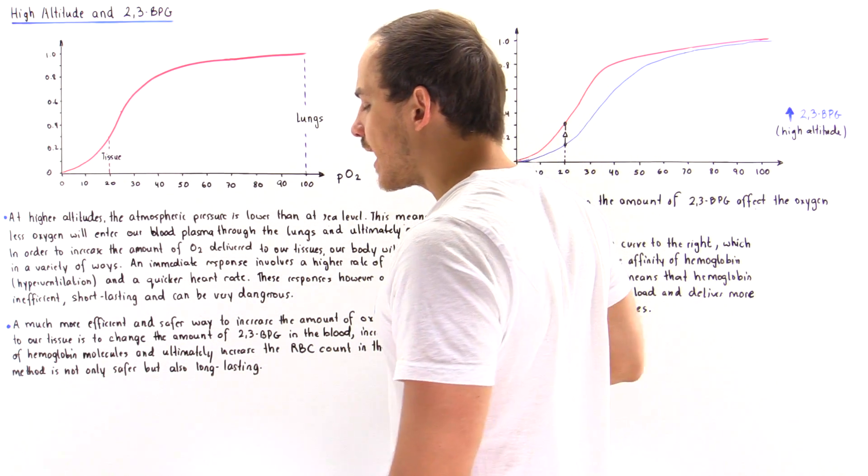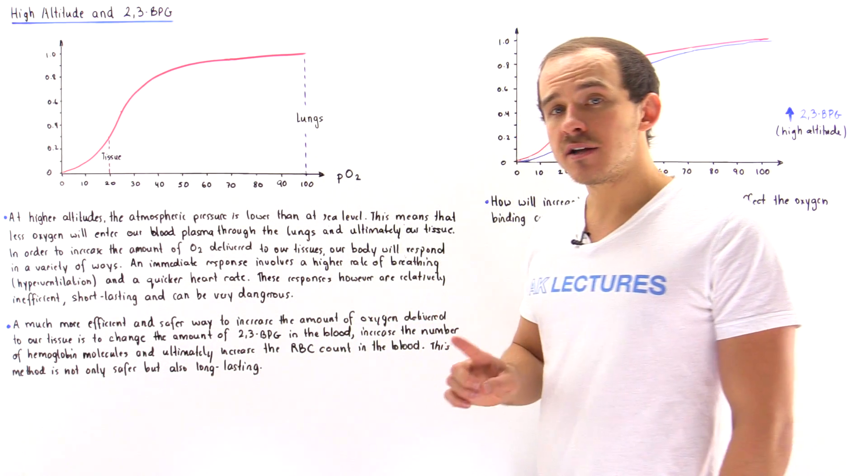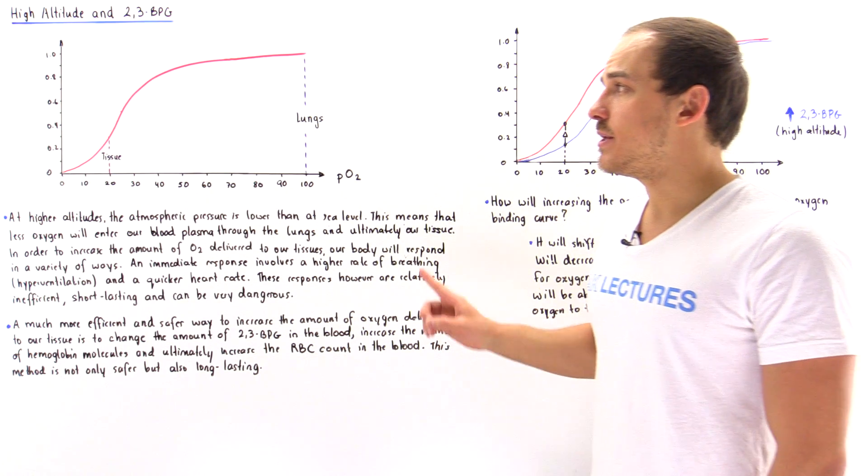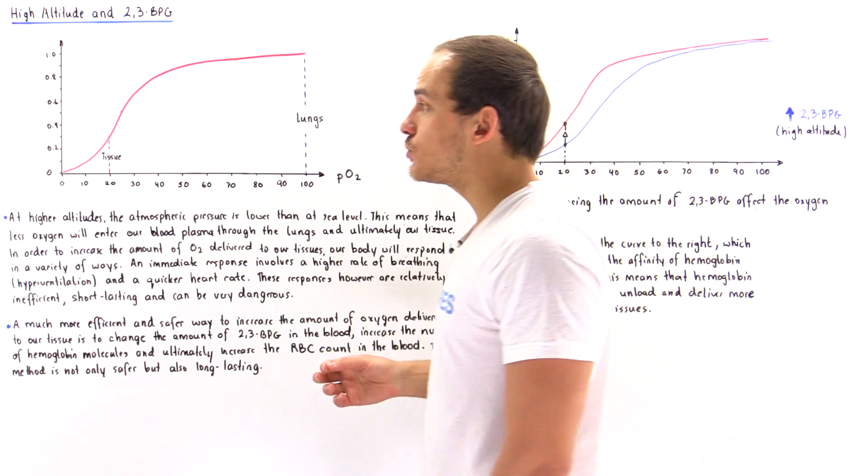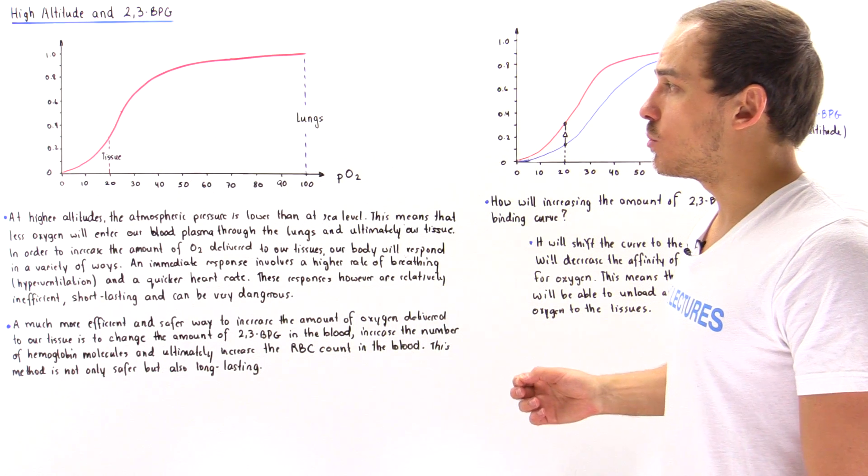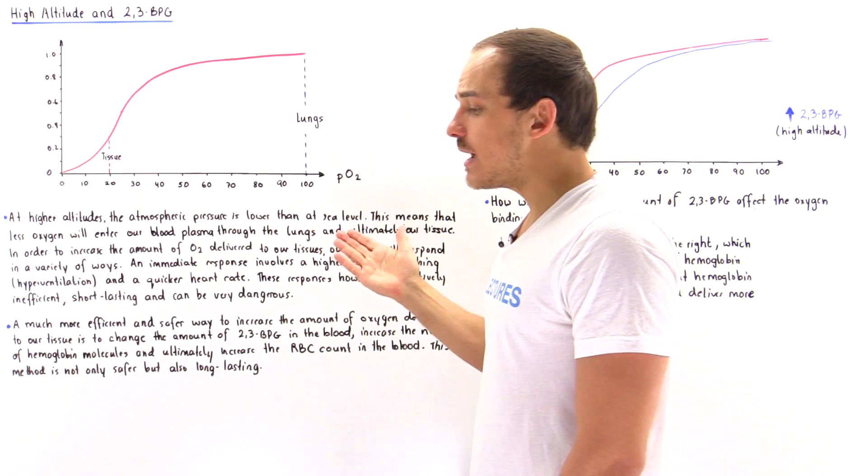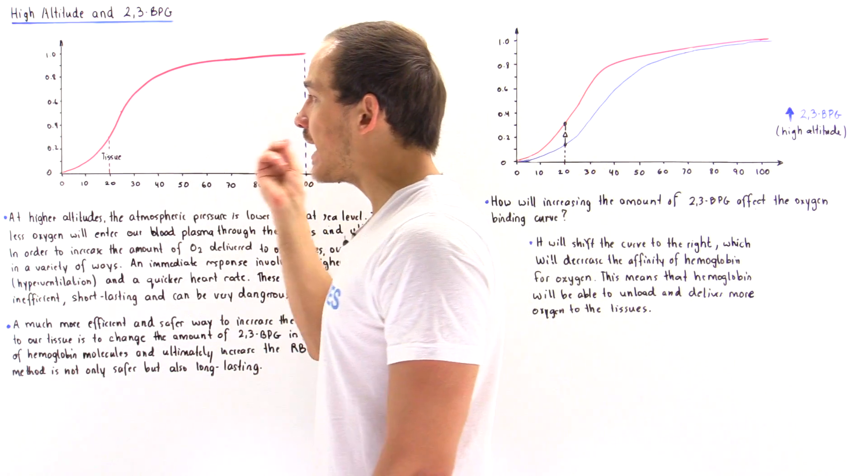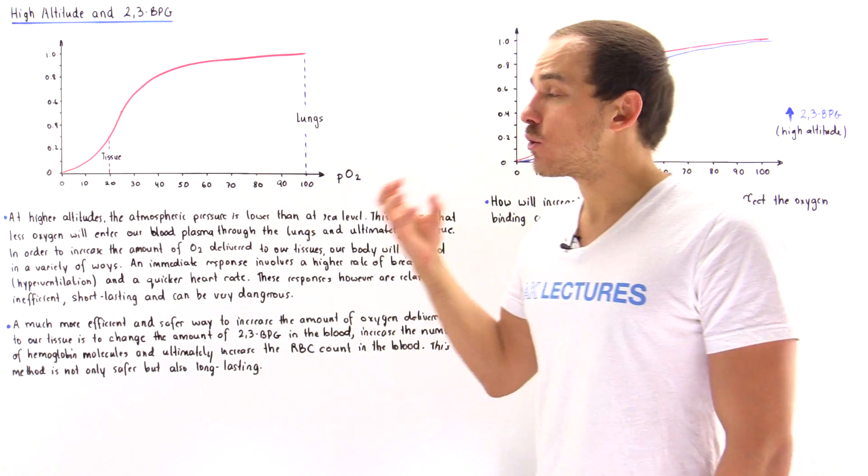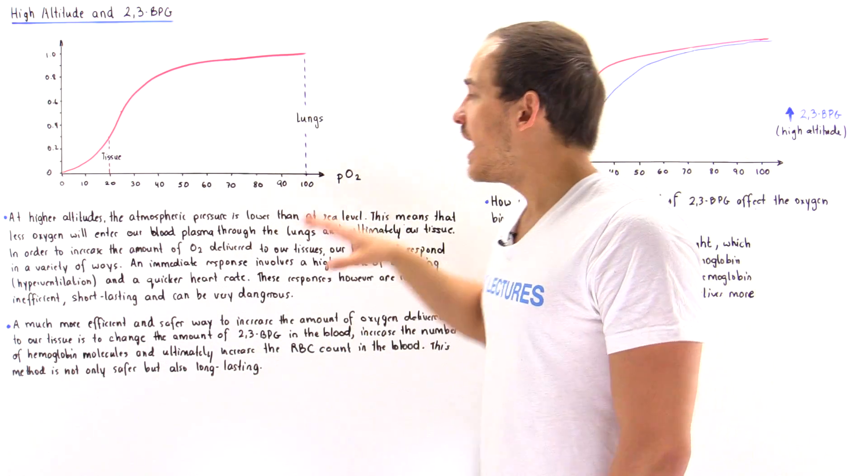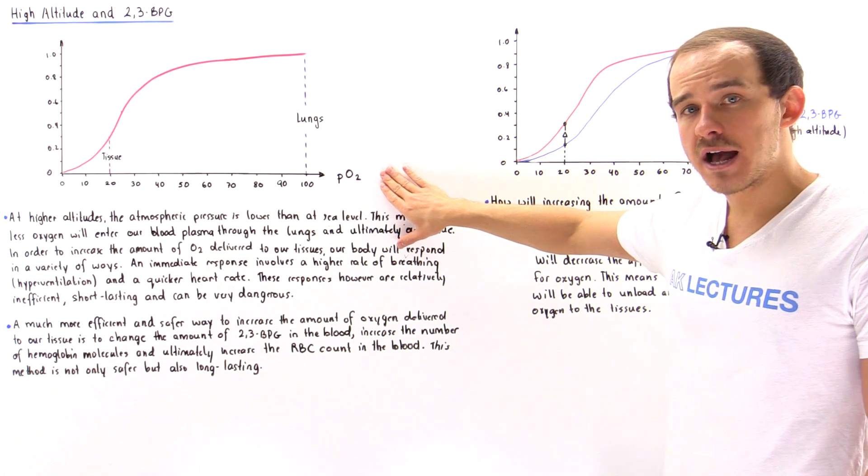Let's begin by focusing on the oxygen-binding curve of hemoglobin. As always, the x-axis is the partial pressure of oxygen given in millimeters of mercury, and the y-axis is the fractional saturation of hemoglobin. The red curve describes how much hemoglobin inside our blood is saturated with oxygen at some partial pressure value.